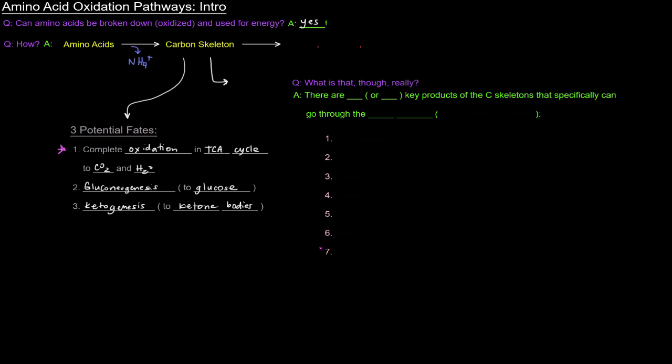So, the carbon skeleton, of course, when it goes to the TCA cycle, it can give us a bunch of NADH, FADH2, GTP. If that carbon skeleton makes its way somehow, one way or another, to the TCA cycle, then those carbons are oxidized for those reduced electron equivalents, NADH and FADH2, and, of course, we can get GTP as well.